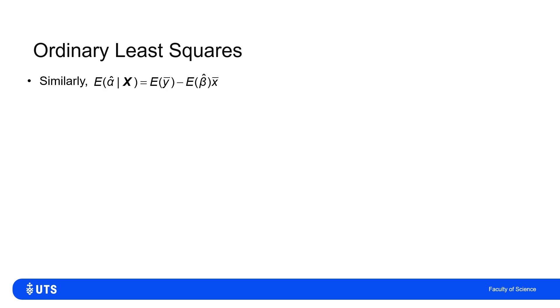Similarly, this is probably a little bit easier to show, but the expected value of the intercept estimate is the true value of the intercept. So what this says is that under ordinary least squares, the slope and the intercept parameters are both unbiased.